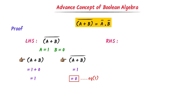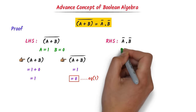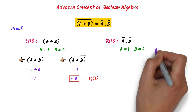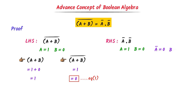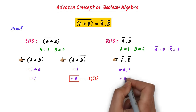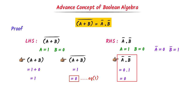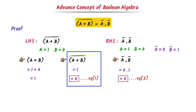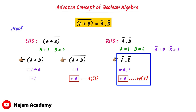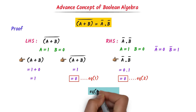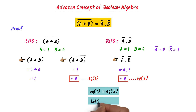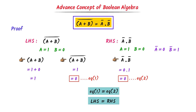At the right-hand side, we have a-bar dot b-bar. With a equal 1 and b equal 0, a-bar equals 0 and b-bar equals 1. Multiplying: 0 dot 1 gives 0. Thus, a-bar dot b-bar equals 0 — equation number 2. Equation 1 equals equation 2, so left-hand side equals right-hand side. Therefore, (a plus b) whole bar equals a-bar dot b-bar.